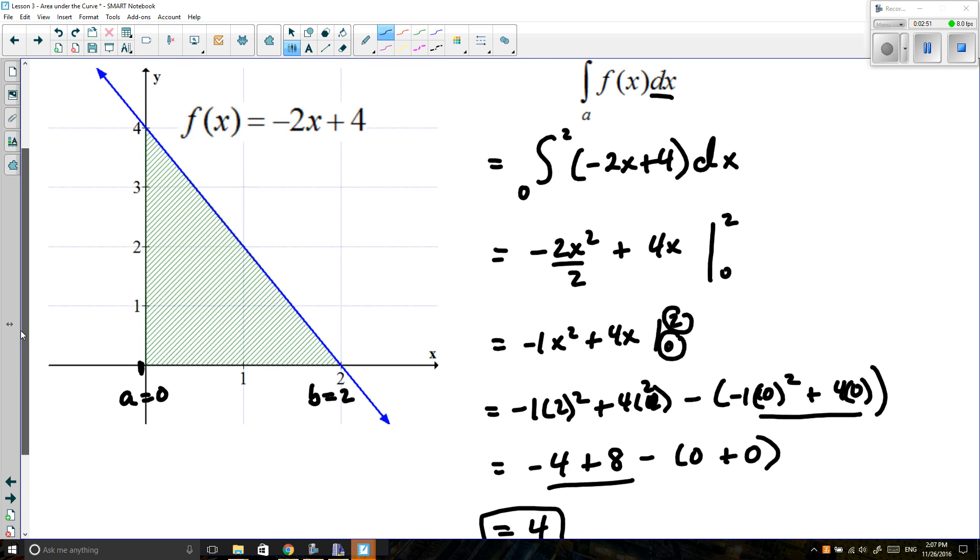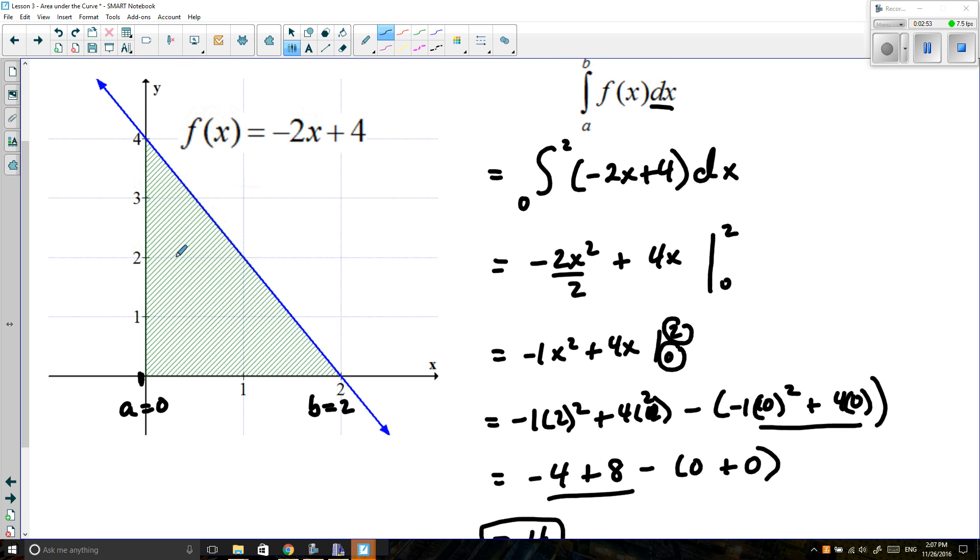Now, honestly, we could have just used a formula to solve this because this is a triangle. We know the area of a triangle is base times height divided by 2. My base would be 2 units, my height would be 4 units, and then divide by 2. So it's a lot easier to do it this way, I'll be honest. But we're not always going to work with linear graphs like this.